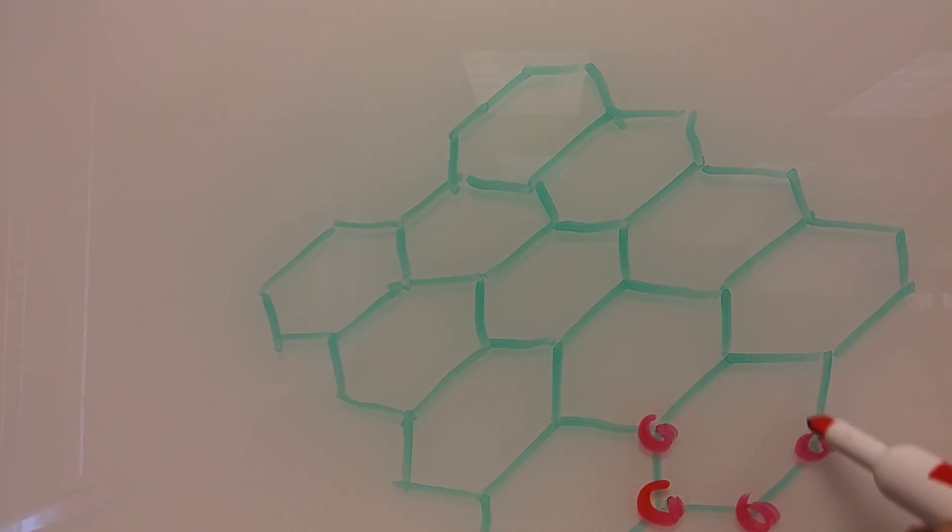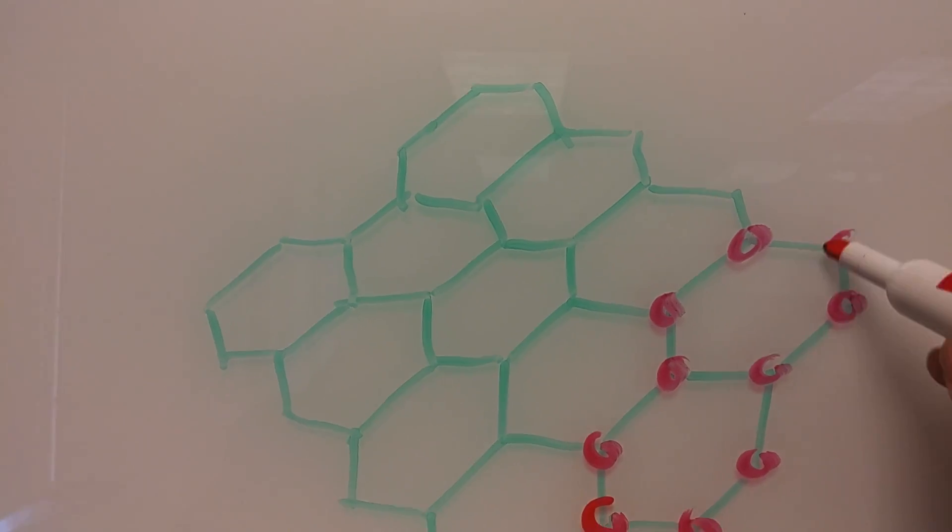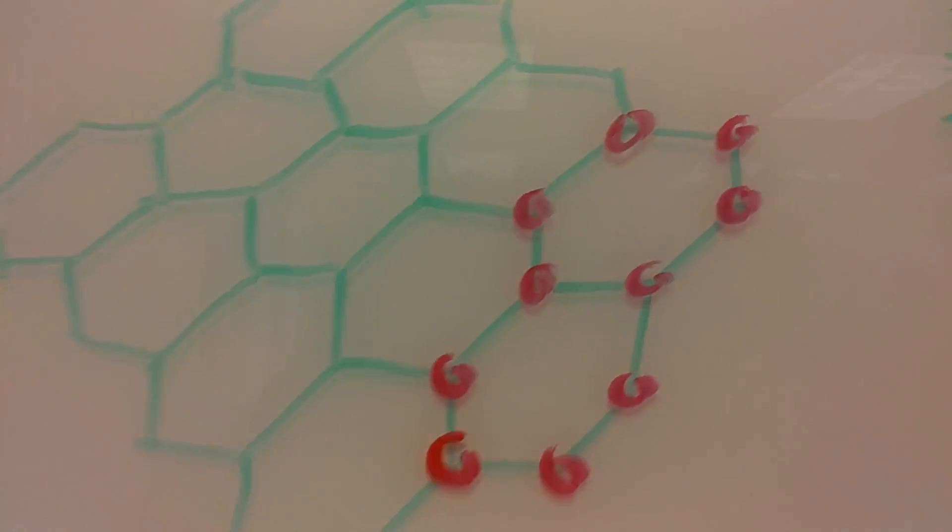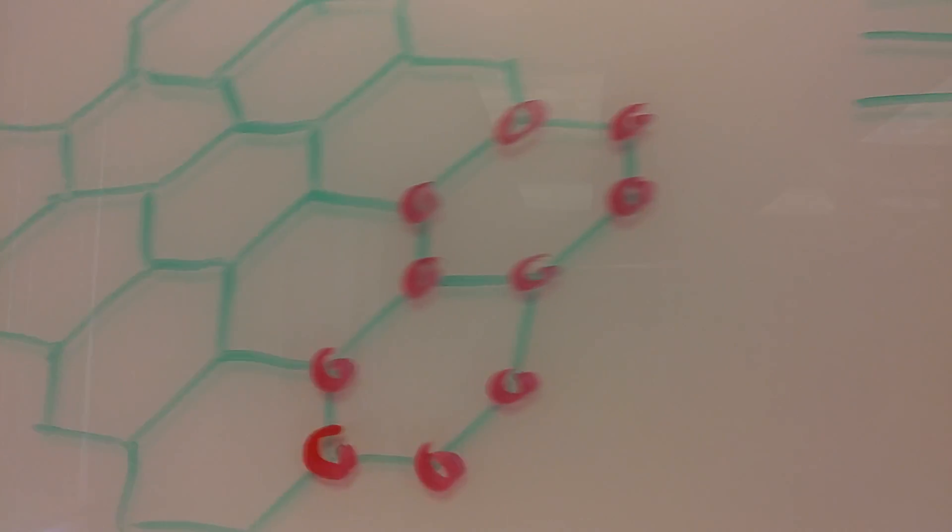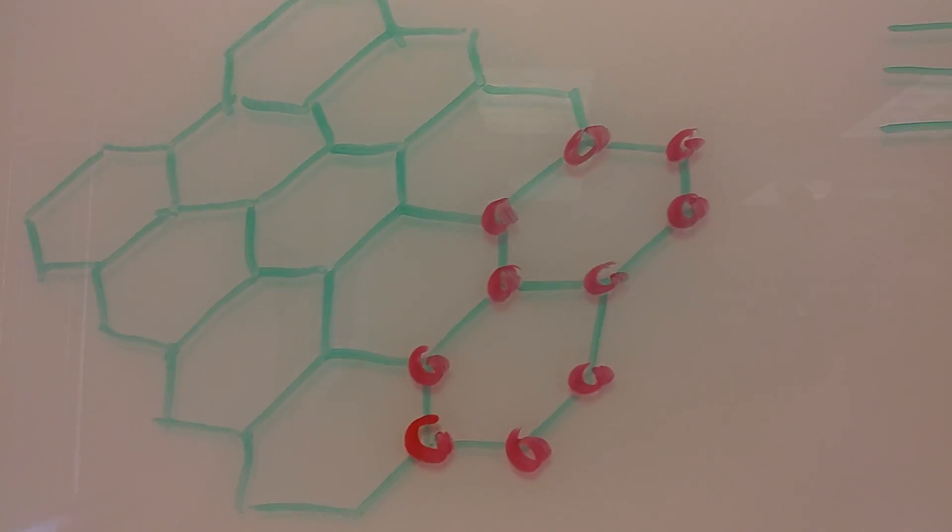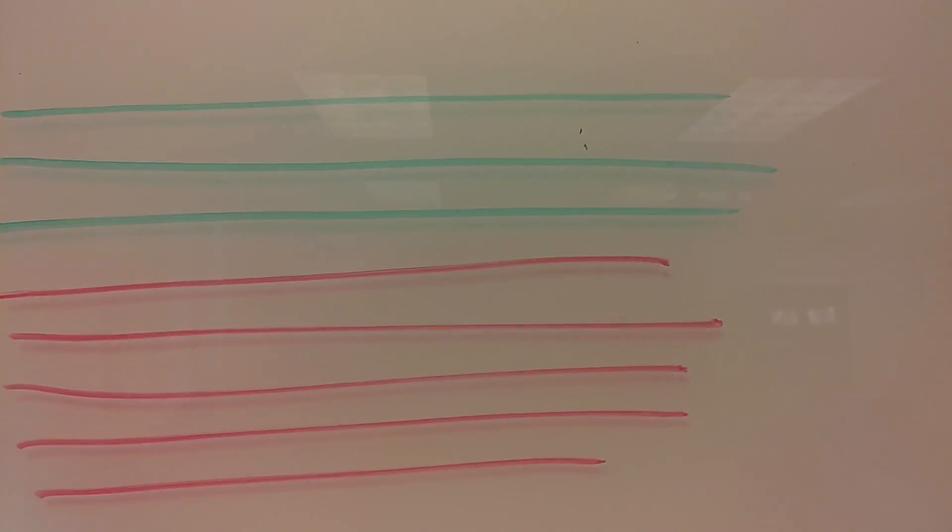Those intersections are carbon atoms, and that's that hexagonal pattern once again. Usually this is where it starts getting mean. Here's the thing: it lays out like this, and graphite is many, many, many layers of this material.